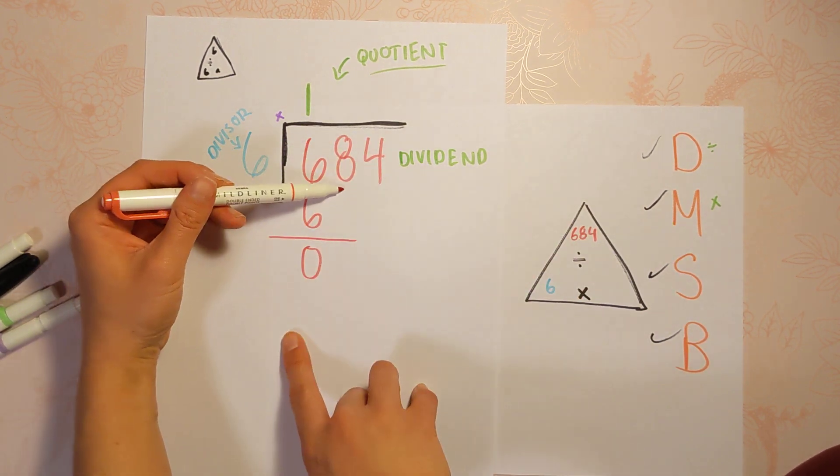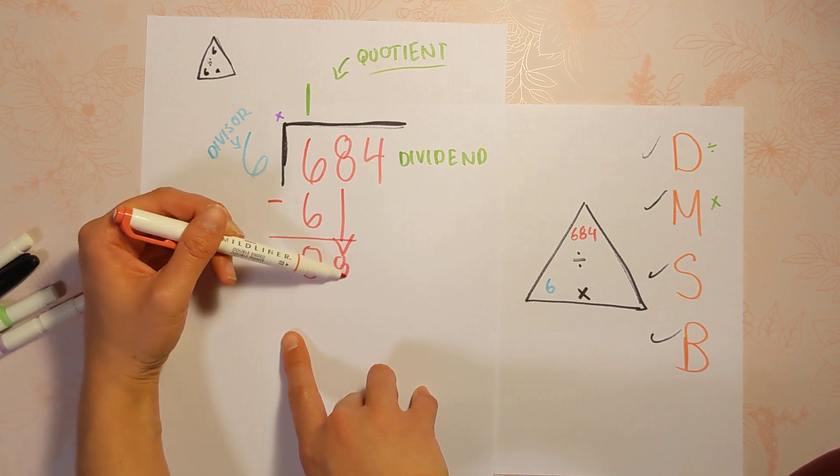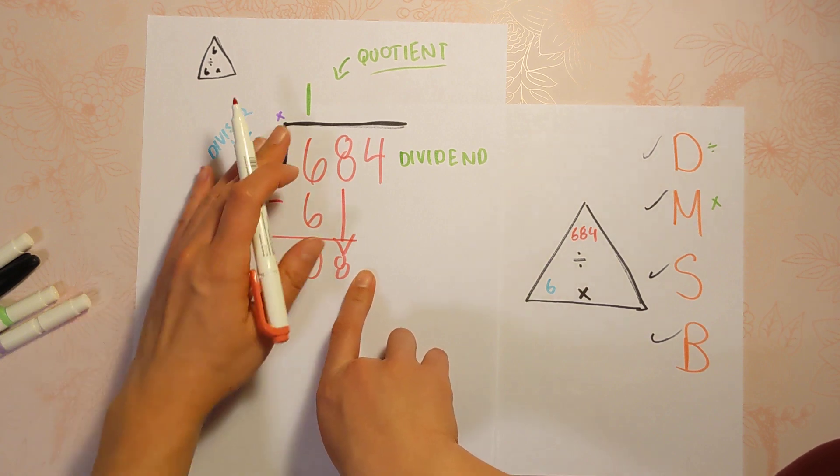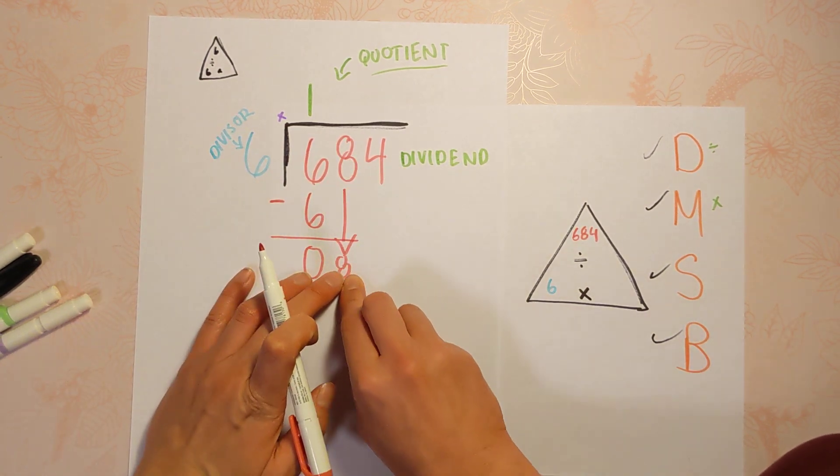And our next step is to bring down. So we bring down the eight. So if we had a one, this would be an 18 we're working with, or if it was a two, it would be a 28. But it was a zero. So we're just working with the eight here.